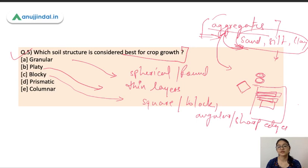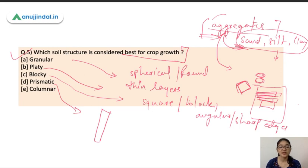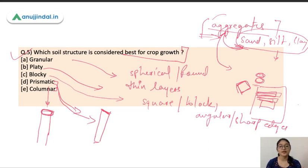In prismatic structure, aggregates are arranged vertically, with vertical axis elongation greater than horizontal expansion, forming column-like shapes. Prismatic and columnar structures are similar, but differ in that columnar structures have rounded tops while prismatic structures have flat tops. The best soil structure for crop growth is granular structure.